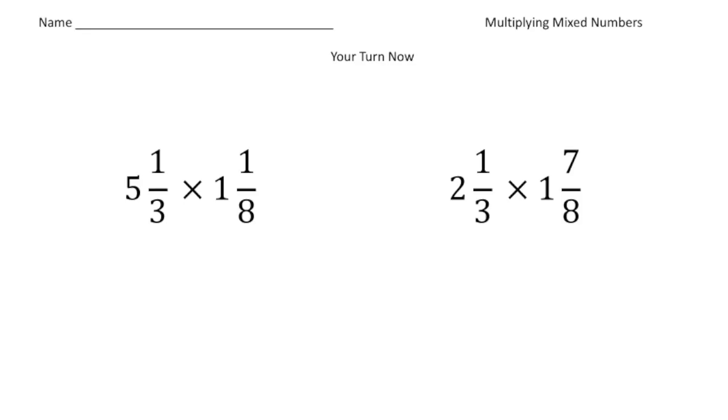Alright, welcome back. Let's see how we do these practice problems. So the first one you have 5 and 1 third times 1 and 1 eighth. So step number one is make them rational. So 5 and 1 third is going to be 16 thirds. So that's in rational form. And then 1 and 1 eighth, when I make it improper, that's going to be 9 eighths.